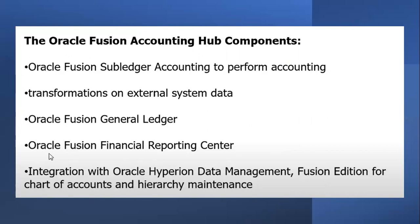The components of Oracle Accounting Hub include Oracle Fusion Subledger Accounting, which is the tool used to perform accounting transformation on external system data. That is exactly what we need to do — take data from the external system and transform it according to the Oracle Cloud application format. It is purely integrated with Oracle Fusion General Ledger, or Oracle Cloud GL.